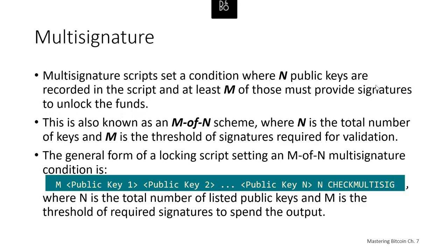Multi-signature scripts set a condition where N public keys are recorded in the script, and at least M of those public keys must provide signatures to unlock the funds. This is also referred to as an M-of-N scheme, where N is the total number of keys and M is the minimum threshold of signatures required to validate the transaction. For example, a two-of-three multi-signature lists three public keys as potential signers, and at least two must be used to create valid digital signatures to spend the funds.